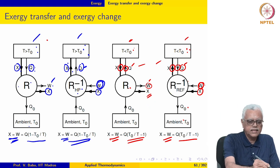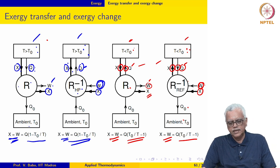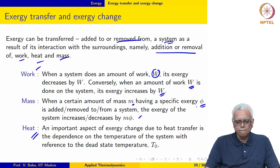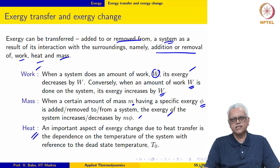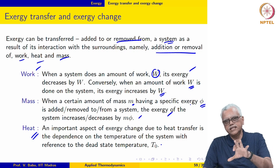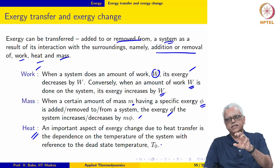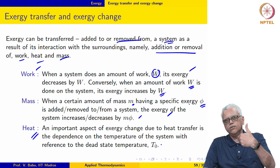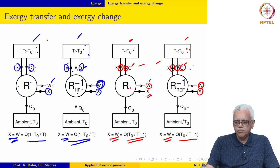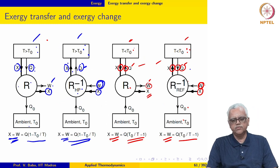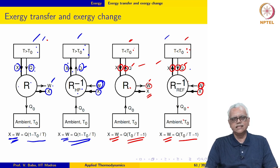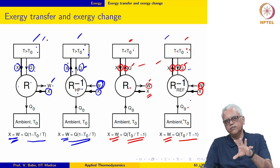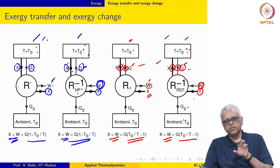When the system is at a temperature less than T₀, the direction of heat transfer and exergy transfer are opposite. When the system is at a temperature greater than T₀, the direction of heat transfer and exergy transfer are the same. This is very important. That is why the amount and direction of exergy transferred is easy to determine for work transfer and mass transfer, whereas for heat transfer, the direction of exergy transfer depends upon whether the system temperature is greater than or less than the ambient temperature. This is very important for doing exergy balance and evaluating second law efficiency.